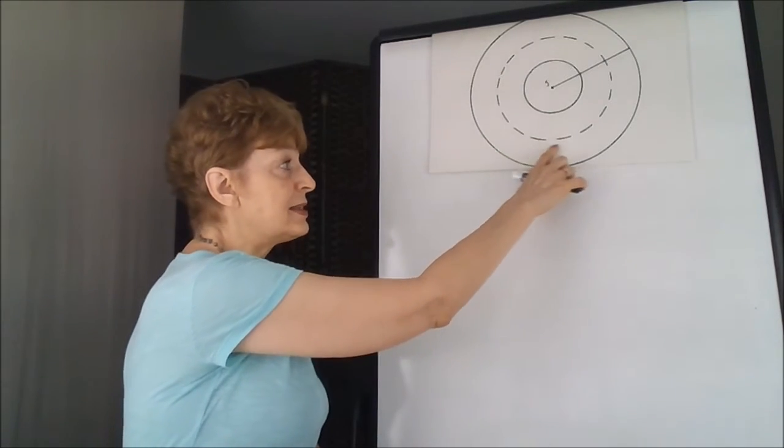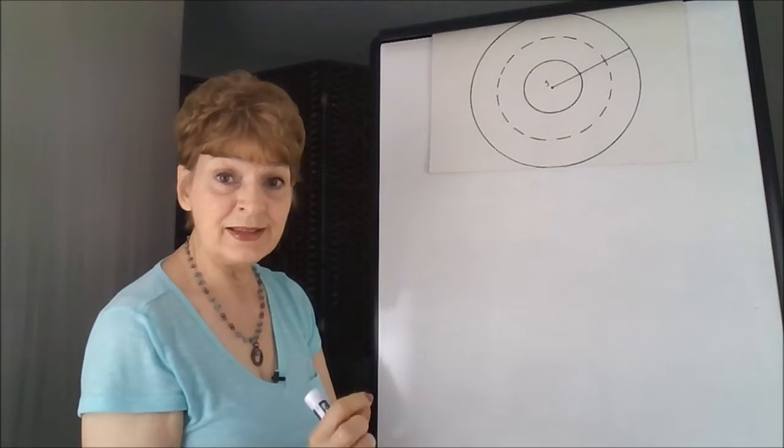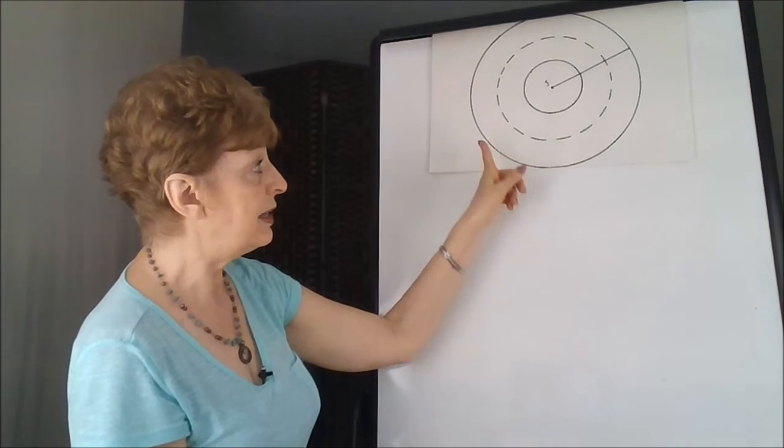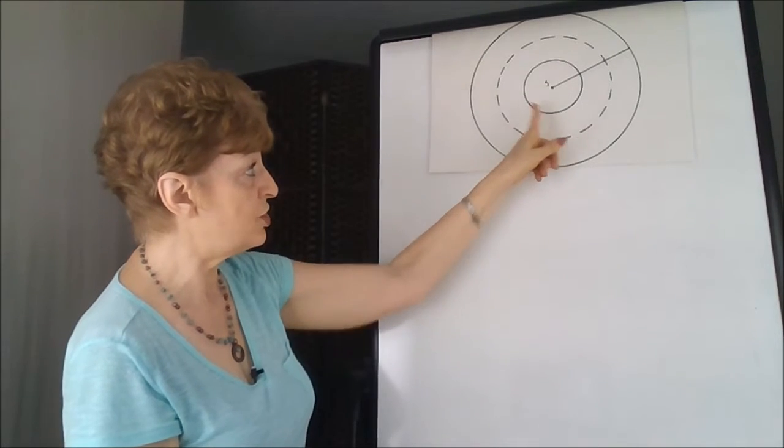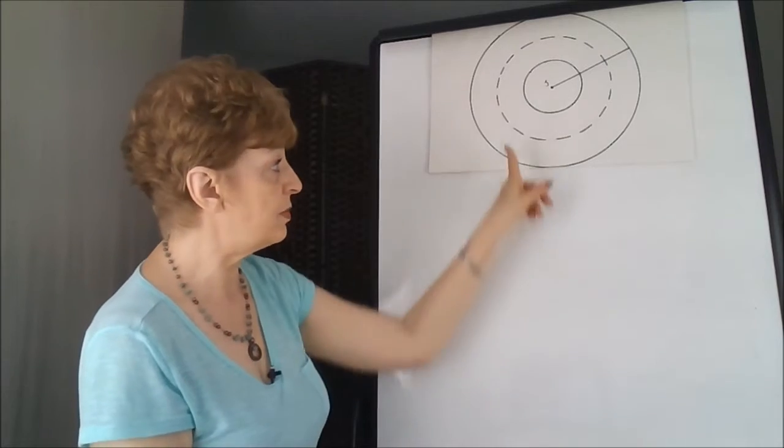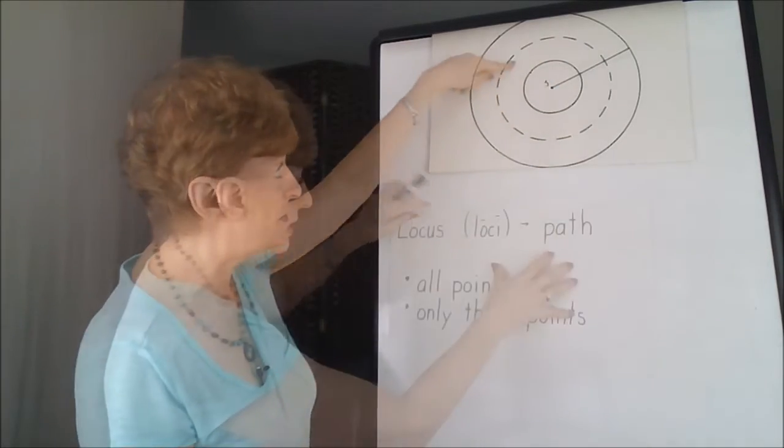The locus in this case is only one set of points that satisfy the exact middle between these two solid circles. This would be the pathway or the locus in this case.